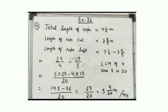So here is the statement. Total length of rope equal to 7 1/4 meter. Length of rope cut 3 4/5 meter. Length of rope left, or you can also write length of remaining piece of rope, 7 1/4 minus 3 4/5. You know how to do the solution. So answer is 69/20. It is improper fraction. So we will convert it into mixed numeral 3 9/20 meter. Don't forget to write the unit. Answer will come in meter because we have to tell the answer in length.